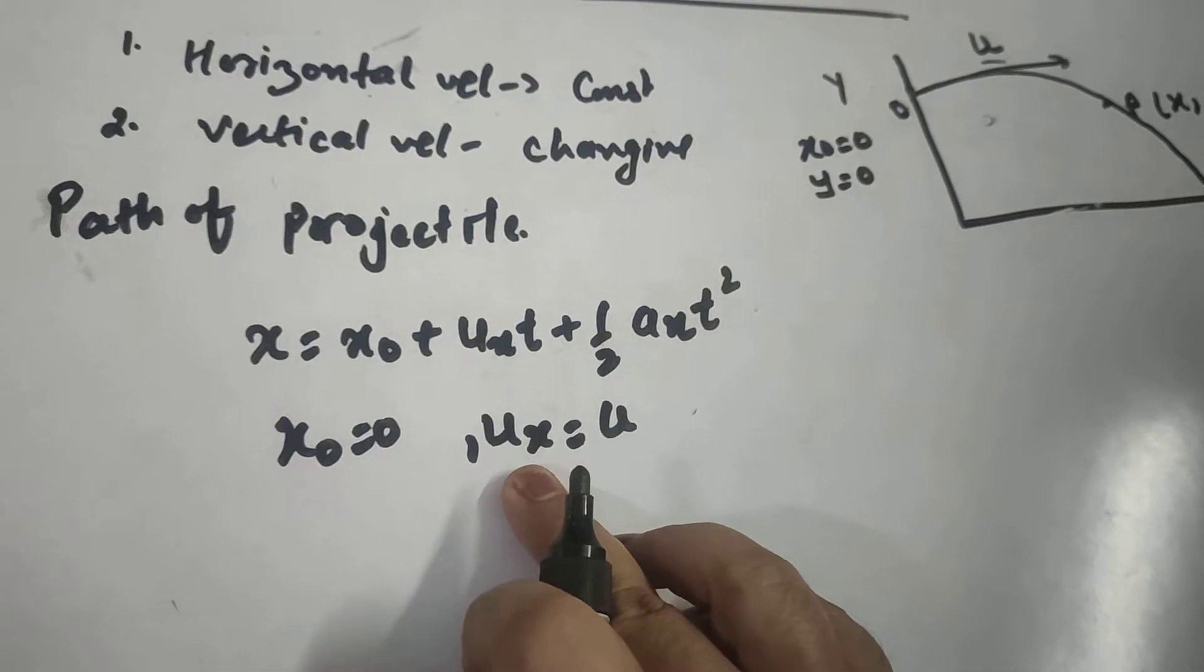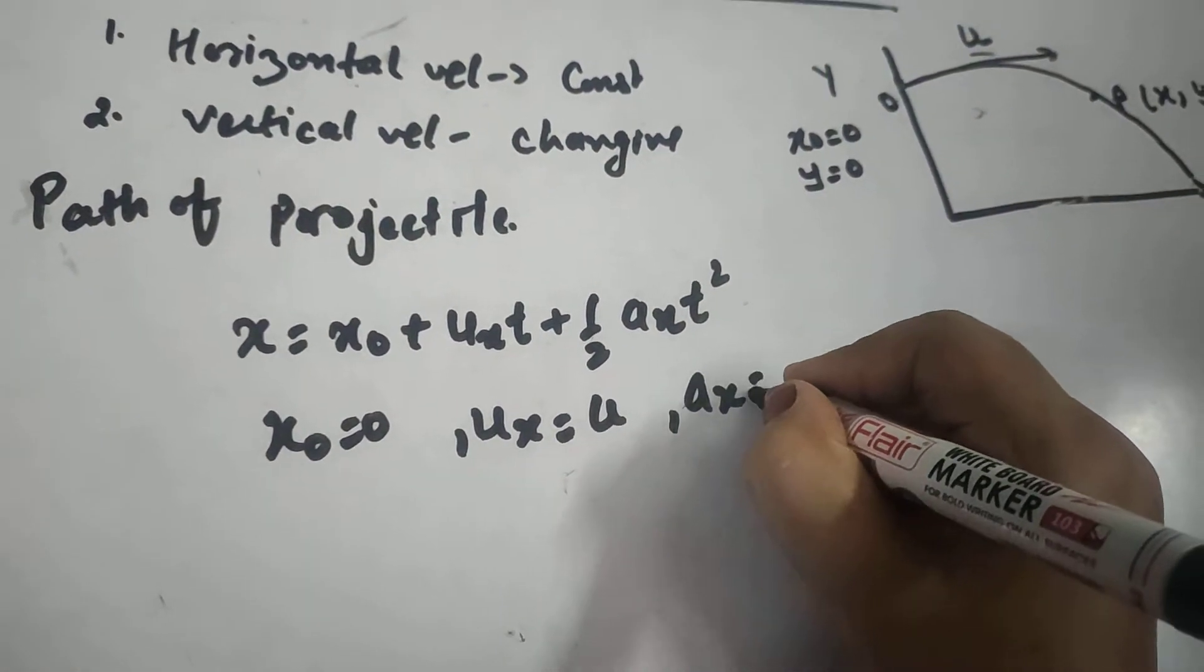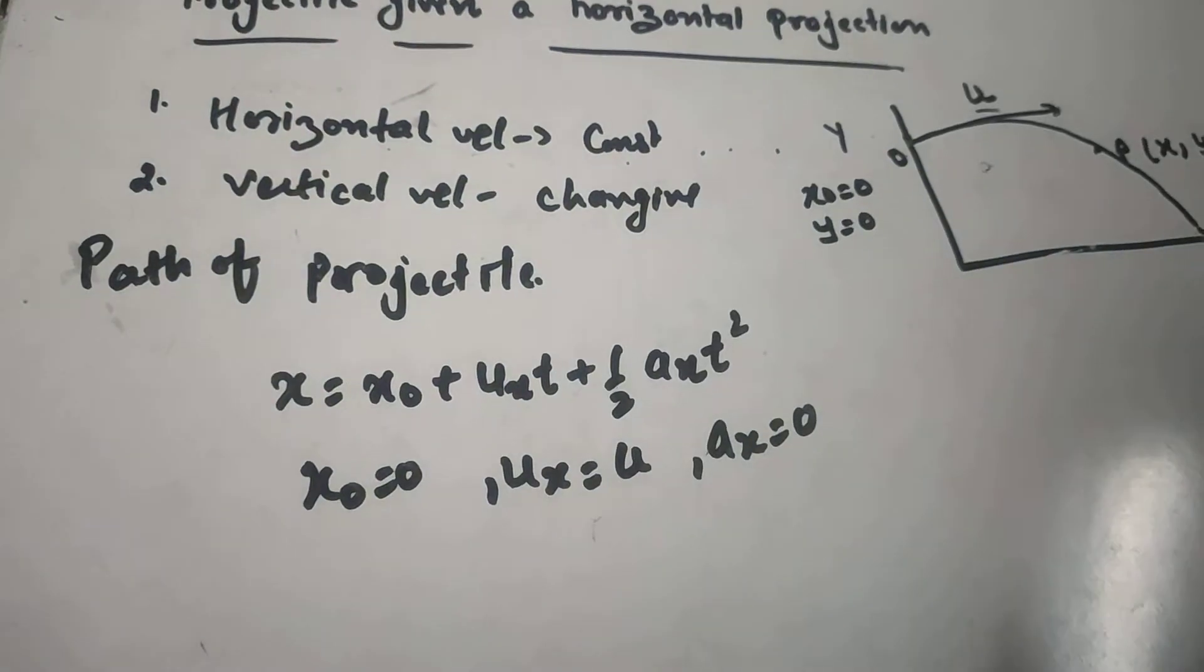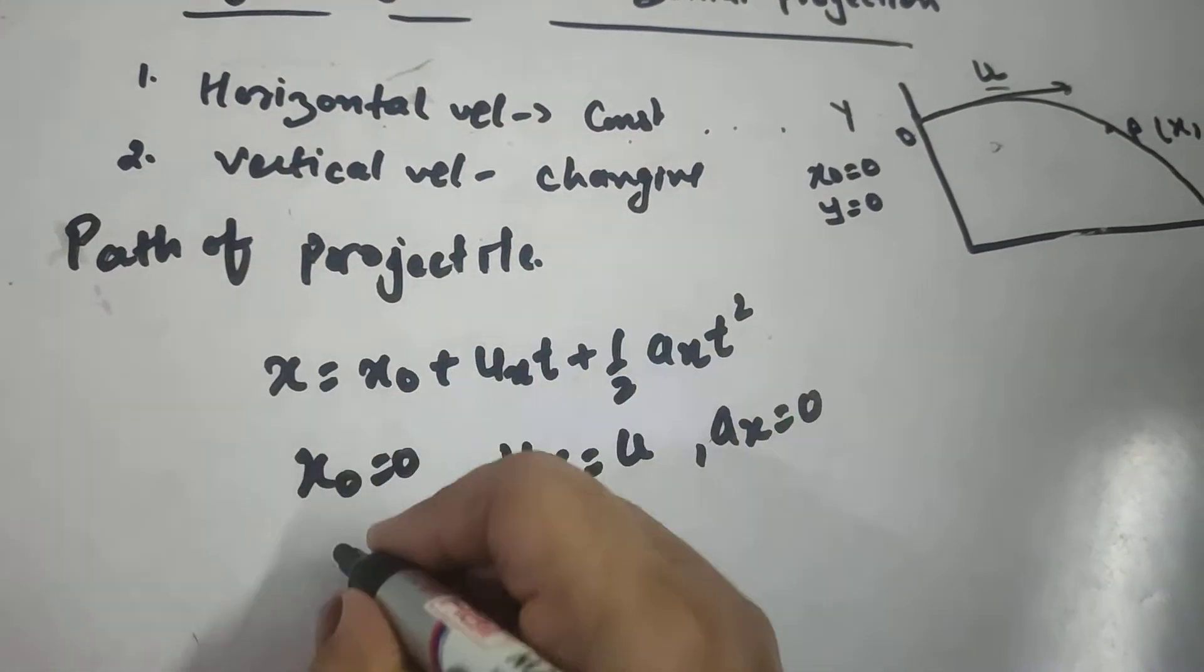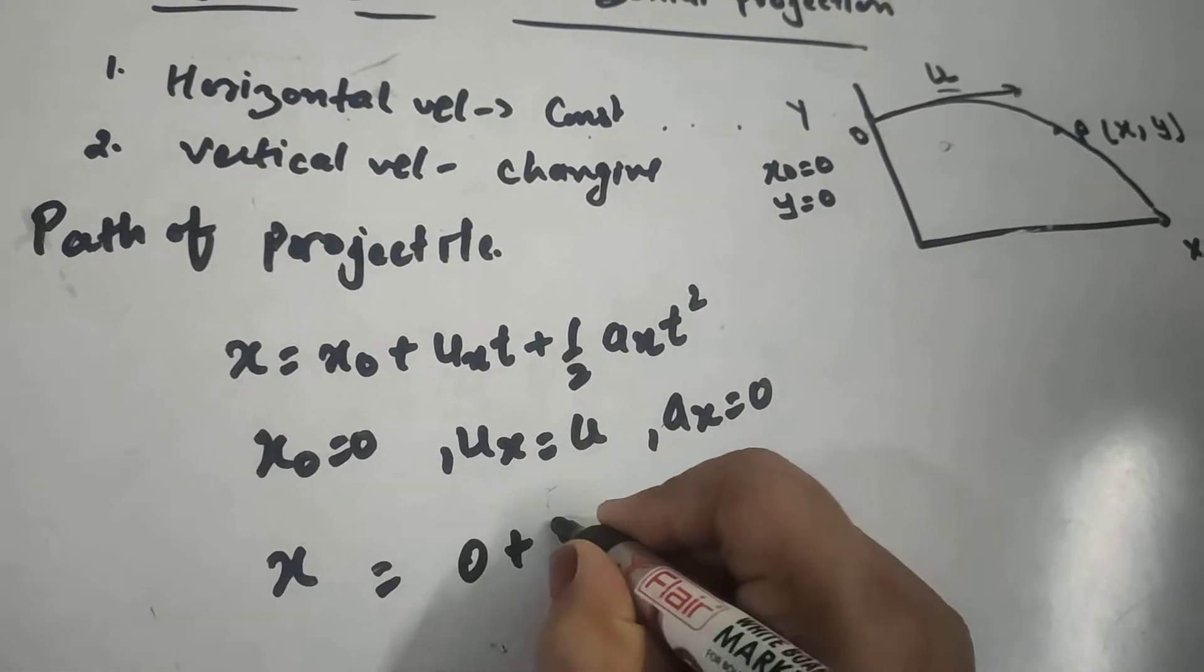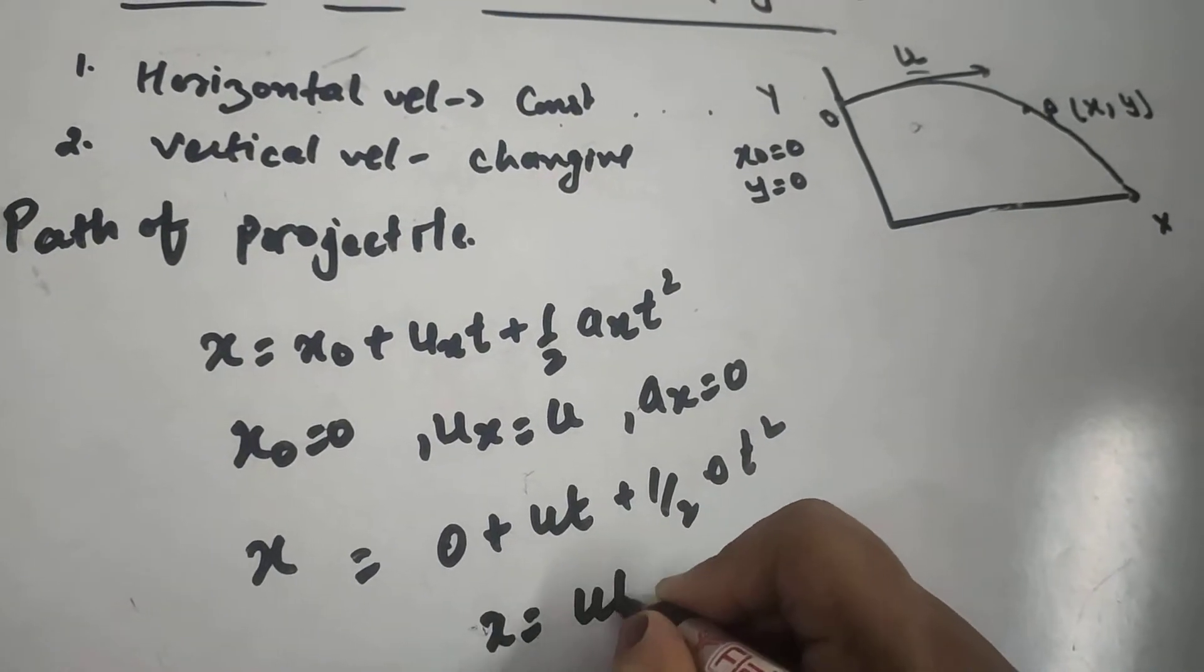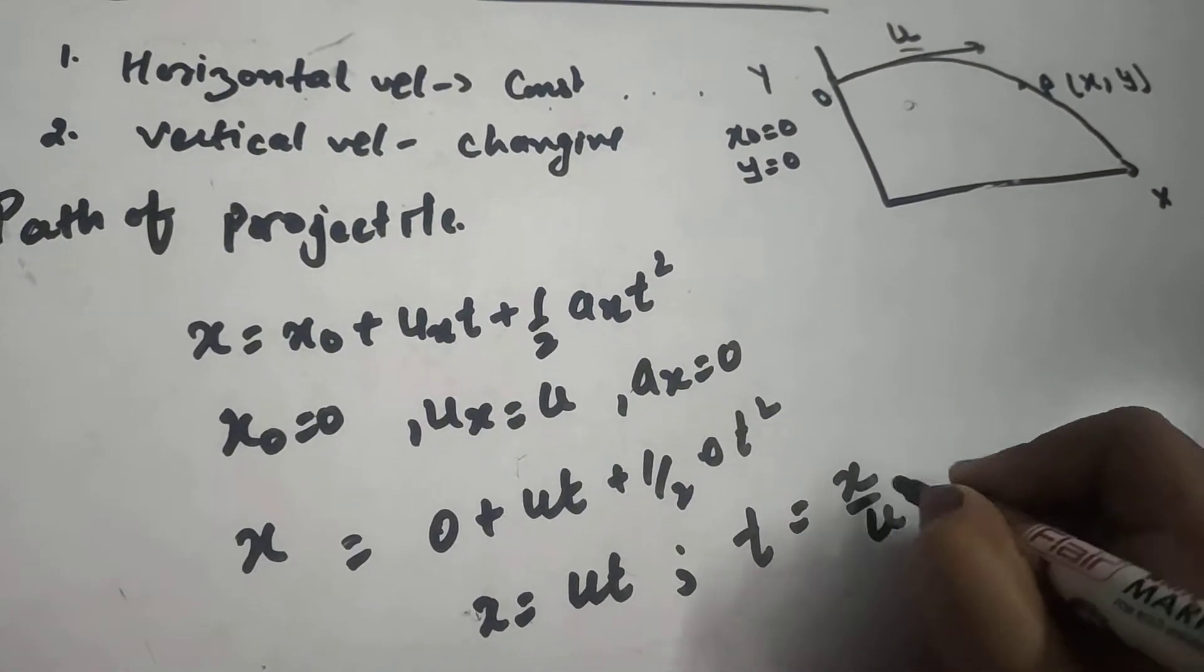AX equals 0 because horizontal velocity remains constant. Since velocity is constant, there will be no acceleration. So the displacement X is given by 0 plus U·T plus half 0·T², or X equals U·T, or we can find T equals X by U.